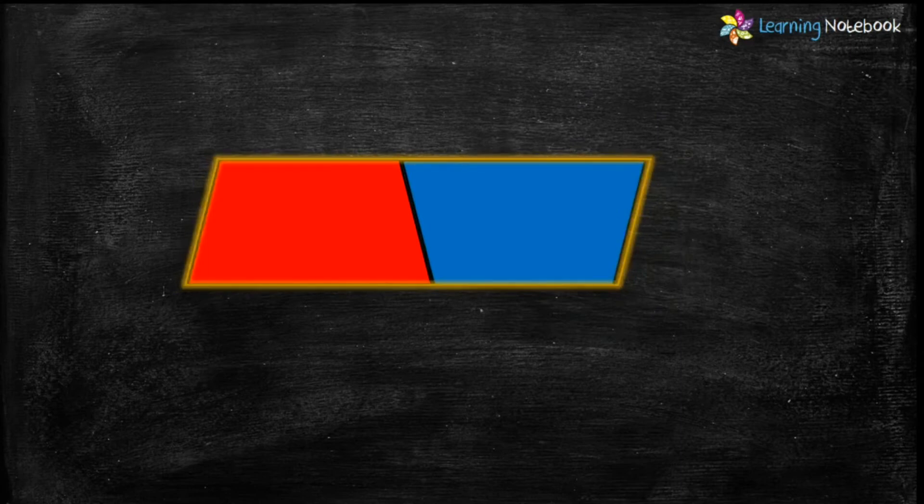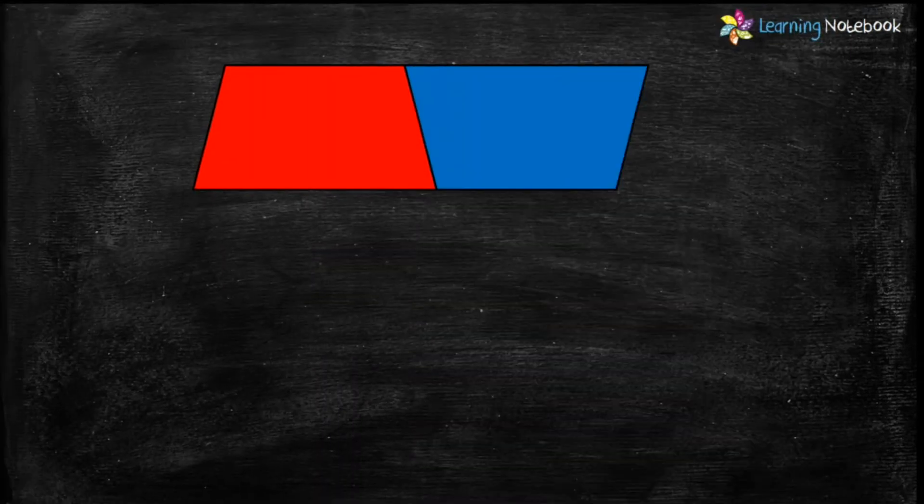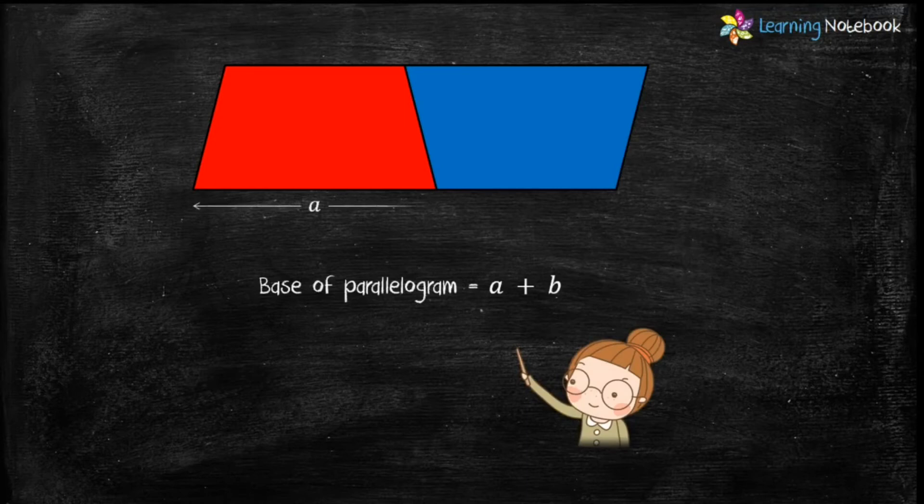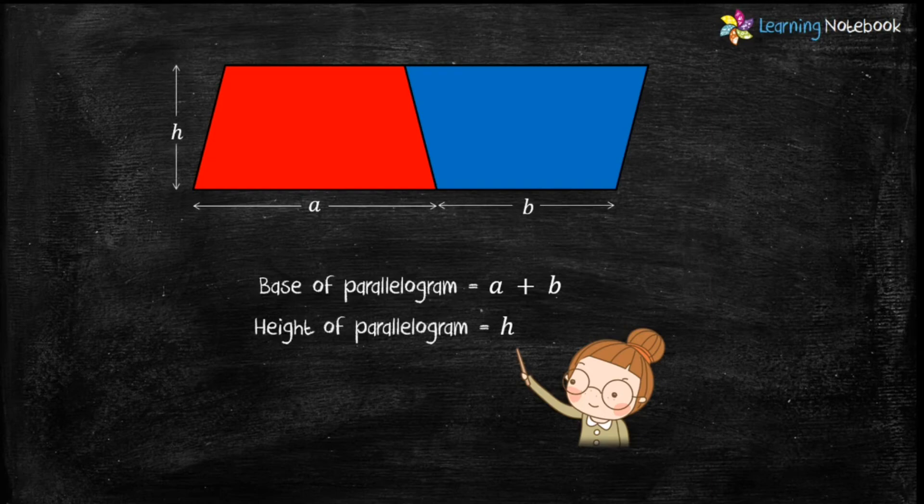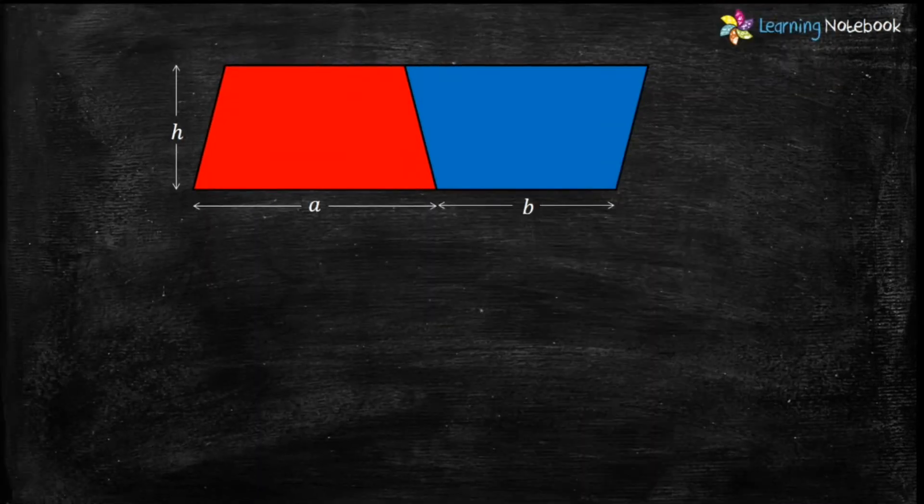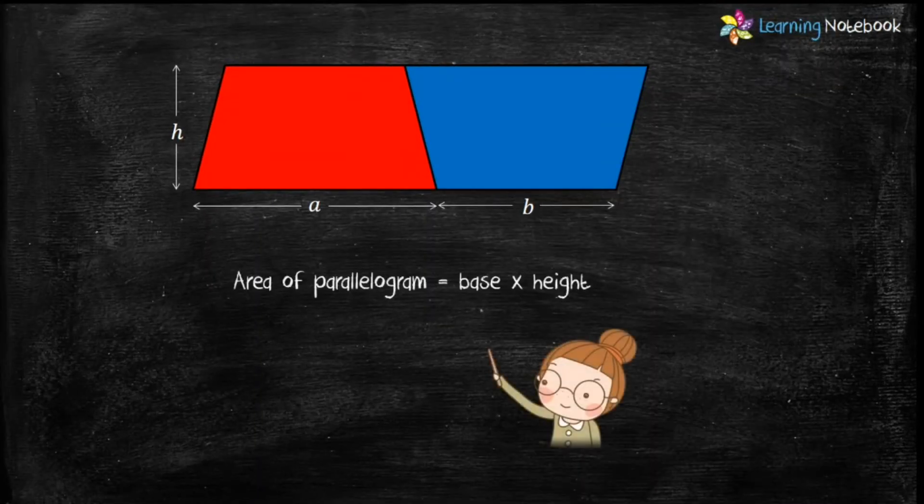Can you tell me what is the length of the base of the parallelogram? Yes, it is a + b. And what is the height of the parallelogram? The height of the parallelogram remains the same as the height of the trapezium, which is equal to h. We know area of parallelogram equals base × height, where base = a + b and height = h.